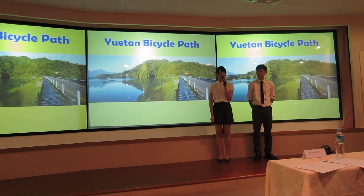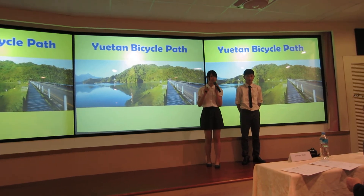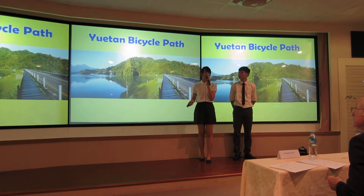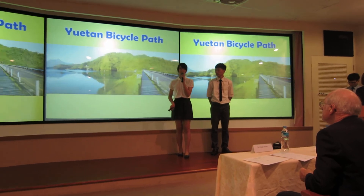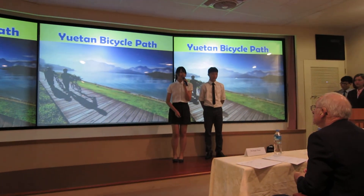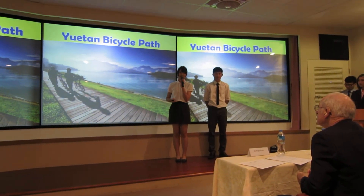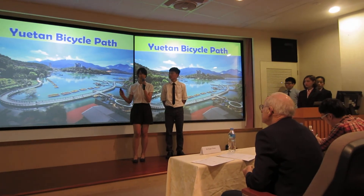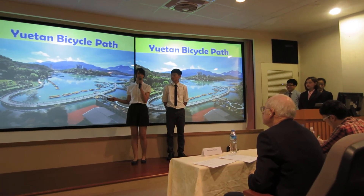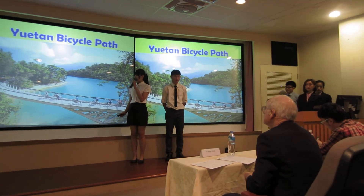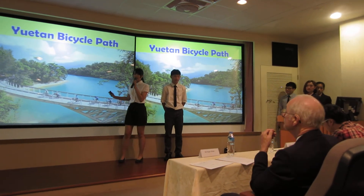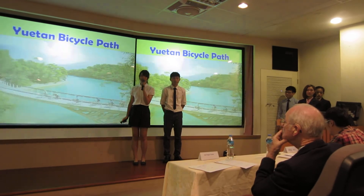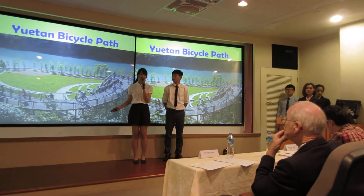Yuen Tan Bicycle Path is selected as one of the top 10 most beautiful bicycle paths in the world by CLNGO. Yuen Tan Bicycle Path is about 33 km. Along the path, you can enjoy the extremely beautiful scenery around Summerlake. It is famous for the dazzling lake and the unique scenery in Summerlake, which attracts a large number of tourists every year.